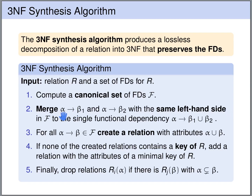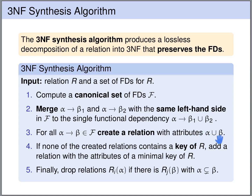So whenever we have functional dependencies alpha uniquely determines beta1 and the same left-hand side alpha uniquely determines beta2 — these can all be sets of attributes — then we replace these two functional dependencies by a single functional dependency alpha uniquely determines beta1 union beta2. Next, we are going to create one relation, one table for each functional dependency. So for every functional dependency alpha uniquely determines beta, we create one table with the attributes of alpha union beta.